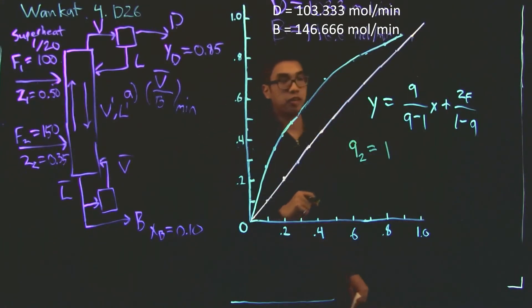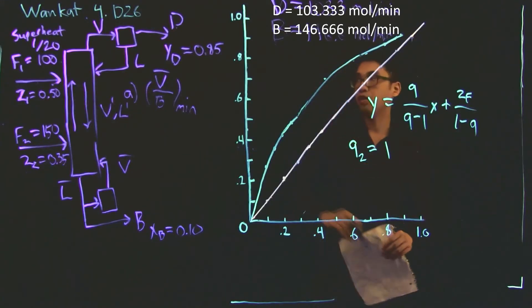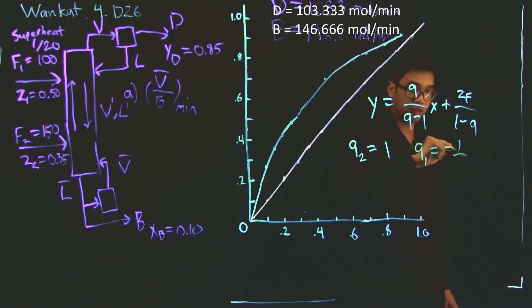Now, Q1 is a bit more complicated because it is a superheated vapor. And so not only is none of it going to be liquid when it's introduced into the tower, it's also going to convert some of the liquid into vapor. And so because of that, this Q is actually a negative value. And the negative value is going to be dependent on how much liquid is evaporated. So in this case, for every 20 moles of feed, 1 mole of liquid is evaporated. And so the value of Q is going to be Q1 is equal to minus 1 over 20, which is equal to minus 0.05.